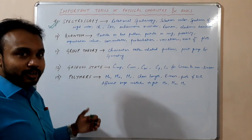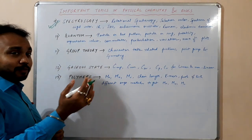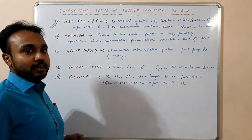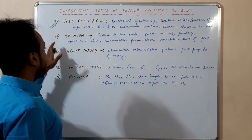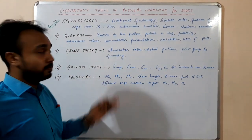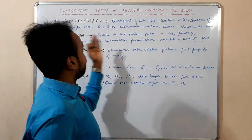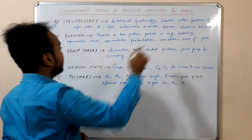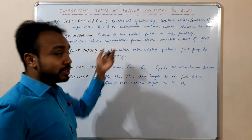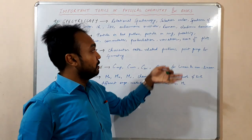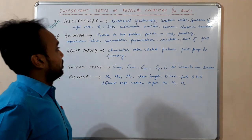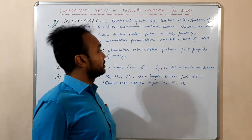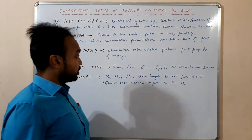Next is quantum chemistry — another important and perhaps the toughest chapter in physical chemistry. If you feel a little uncomfortable with quantum, I will suggest you to start with quantum early. Topics include: particle in a box (1D, 2D, 3D), particle in a ring, probability, expectation values, commutator, perturbation theory, variation theorem, and wave function plots. Then in group theory: character table related problems, point group and symmetry, and all symmetry operations.